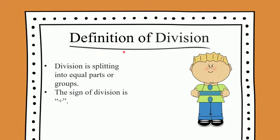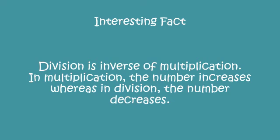Here is our definition of division. Division is splitting into equal parts or groups. The sign of division is a single horizontal line with two dots. There is an interesting fact: division is the inverse of multiplication — basically, division is the opposite of multiplication. In multiplication the number increases, whereas in division the number decreases.